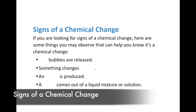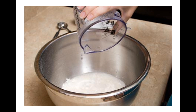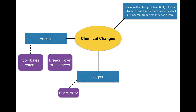Now let's talk about the signs of chemical change. You might ask yourself, how do we know if a chemical change is taking place? First, you can observe that gas bubbles are released. The example for that is baking soda and vinegar — the bubbles that form are carbon dioxide. That's evidence there was a chemical reaction. Let's add 'gas being released' to our graphic organizer under signs of a chemical change.